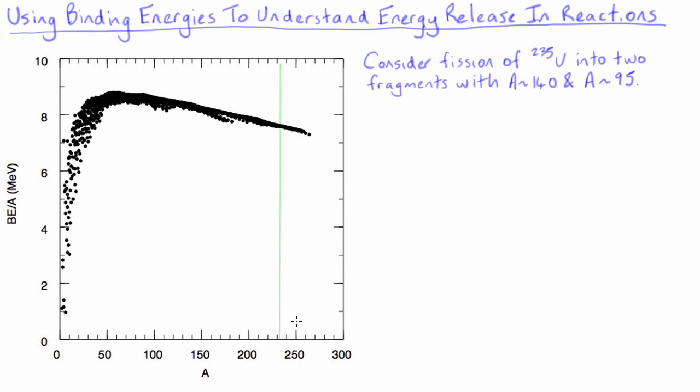We can estimate the binding energy per nucleon for each of the target and the two fission fragments by drawing some lines on the graph.